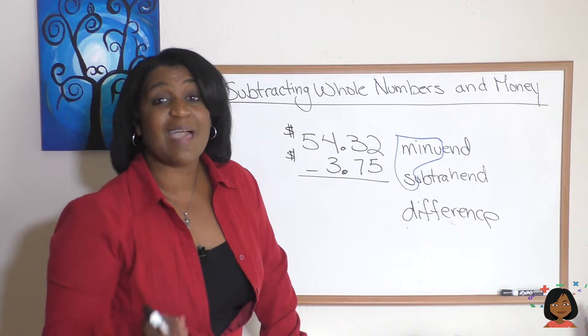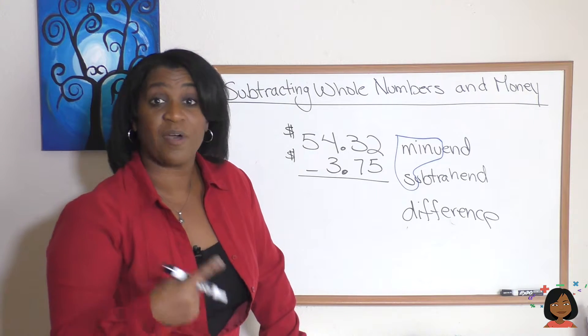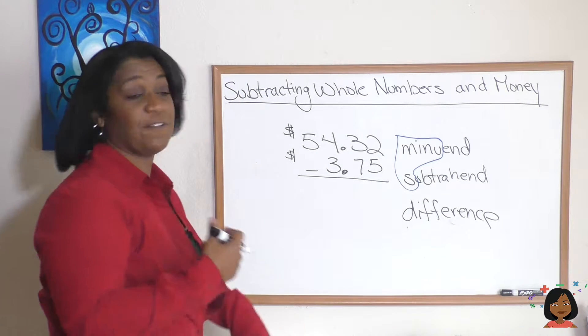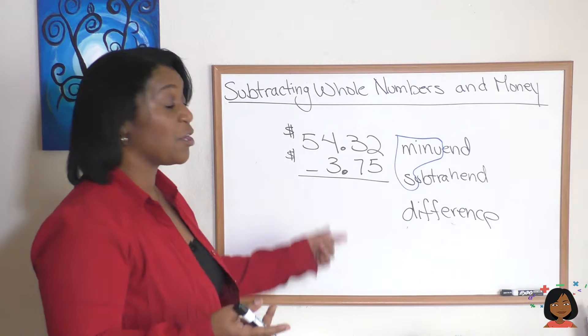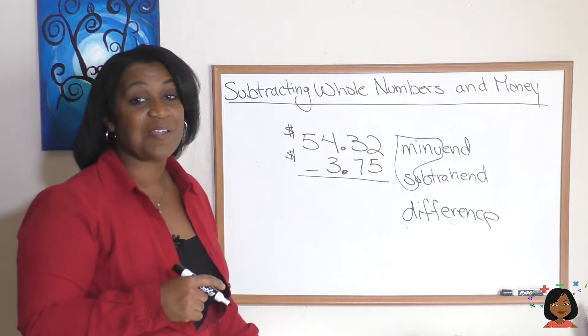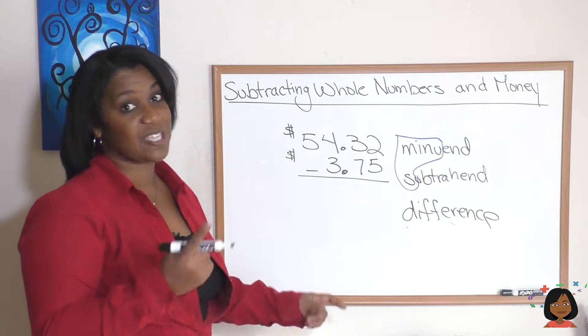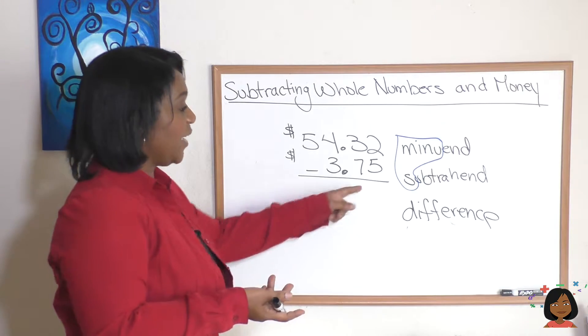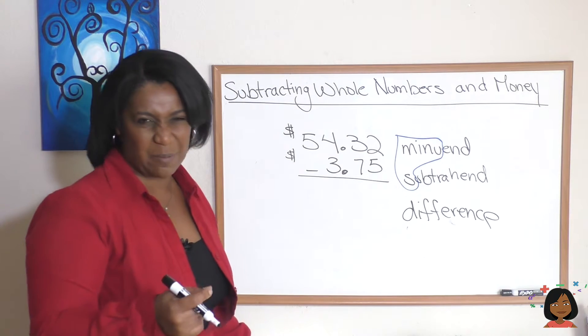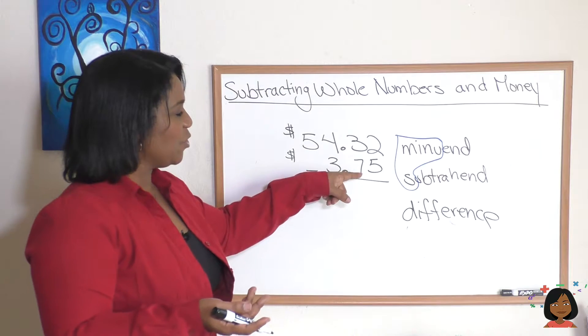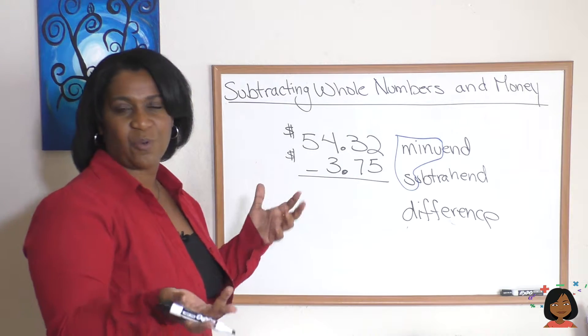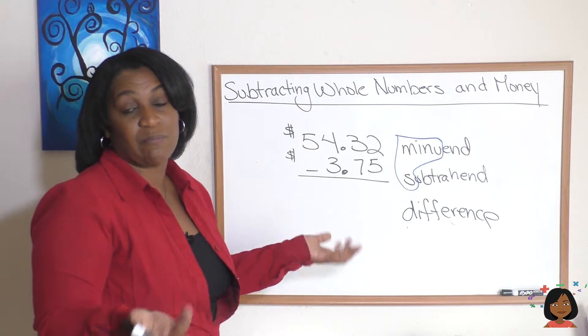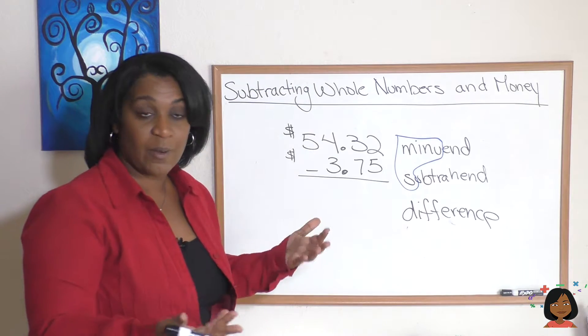Let's keep it going and this time do a subtraction problem with money. We have fifty four dollars and thirty two cents, that's our minuend. We've got three dollars and seventy five cents, that's our subtrahend. Let's go ahead and subtract. You're going to notice right away we've got a bit of an issue, can we subtract five from two? We don't seem to have enough so in math we do something called borrowing.